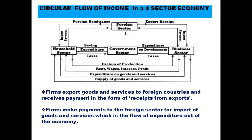Now for the foreign sector and firms: firms export goods and services to foreign countries and receive payment in the form of export receipts. When Indian firms sell goods and services to foreigners, they get money in return - foreigners make payment for the exports. So money flows from the foreign sector to the firms as export receipts.